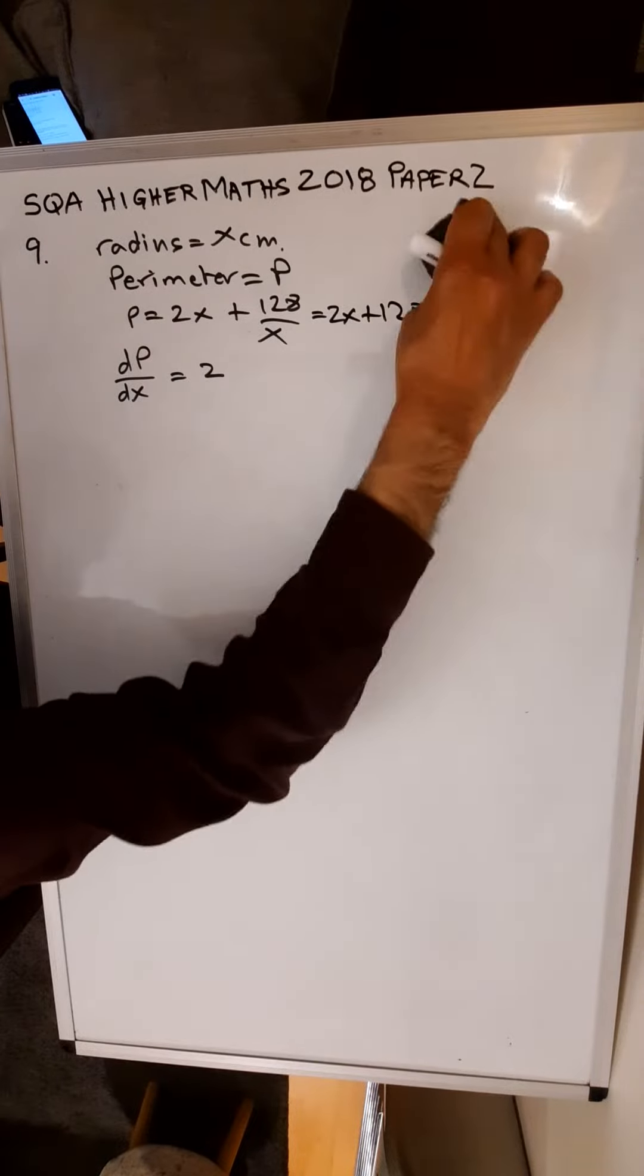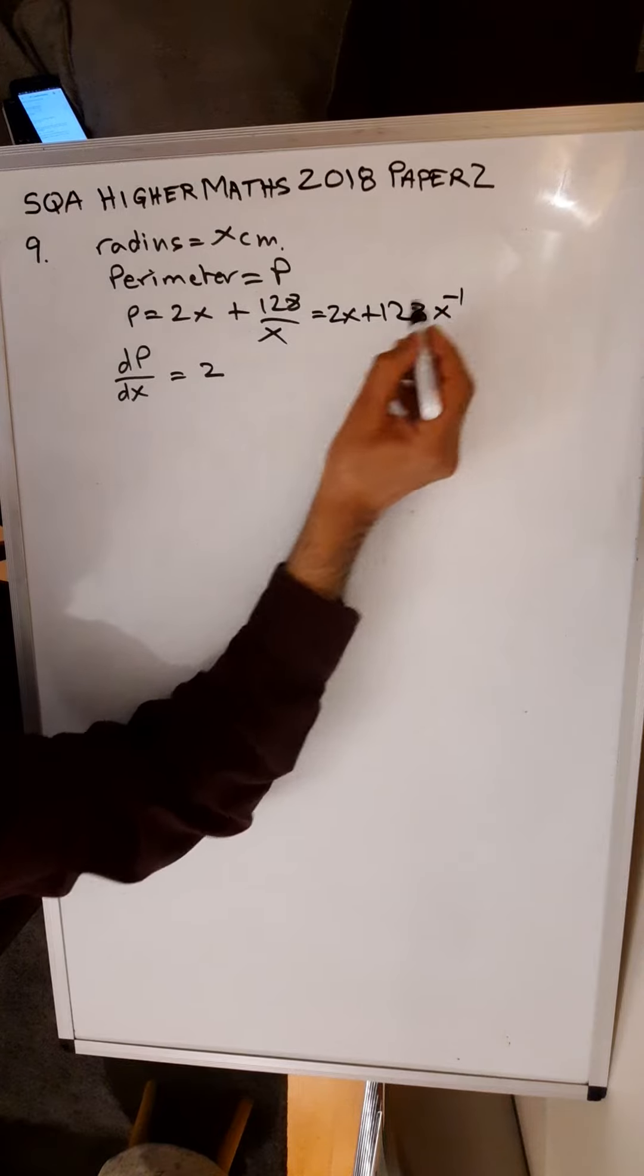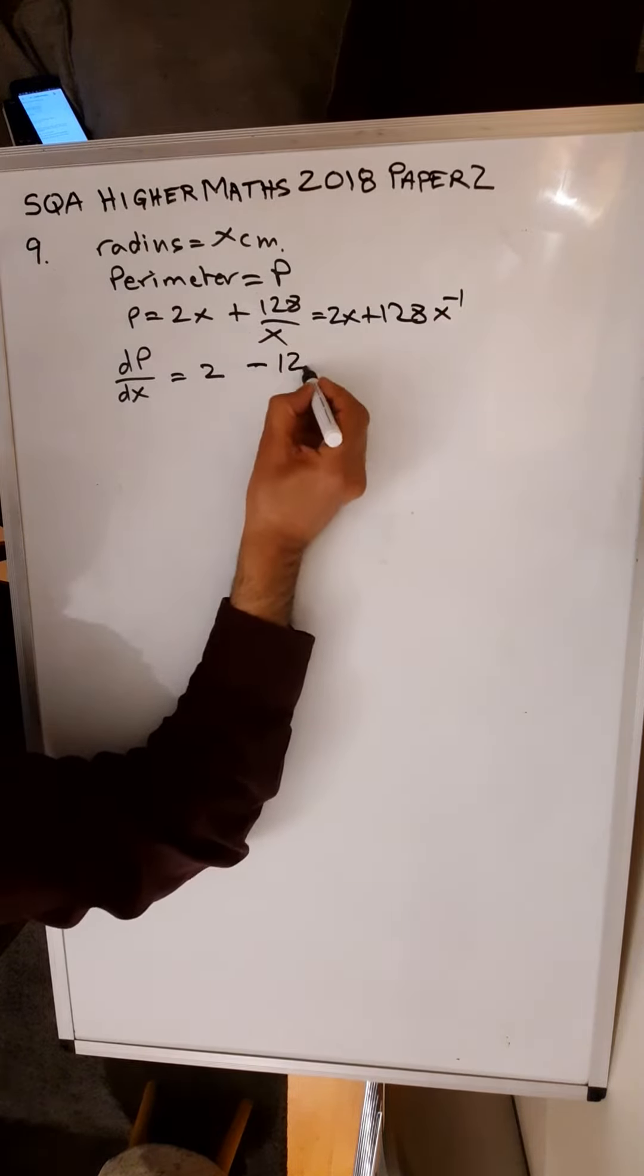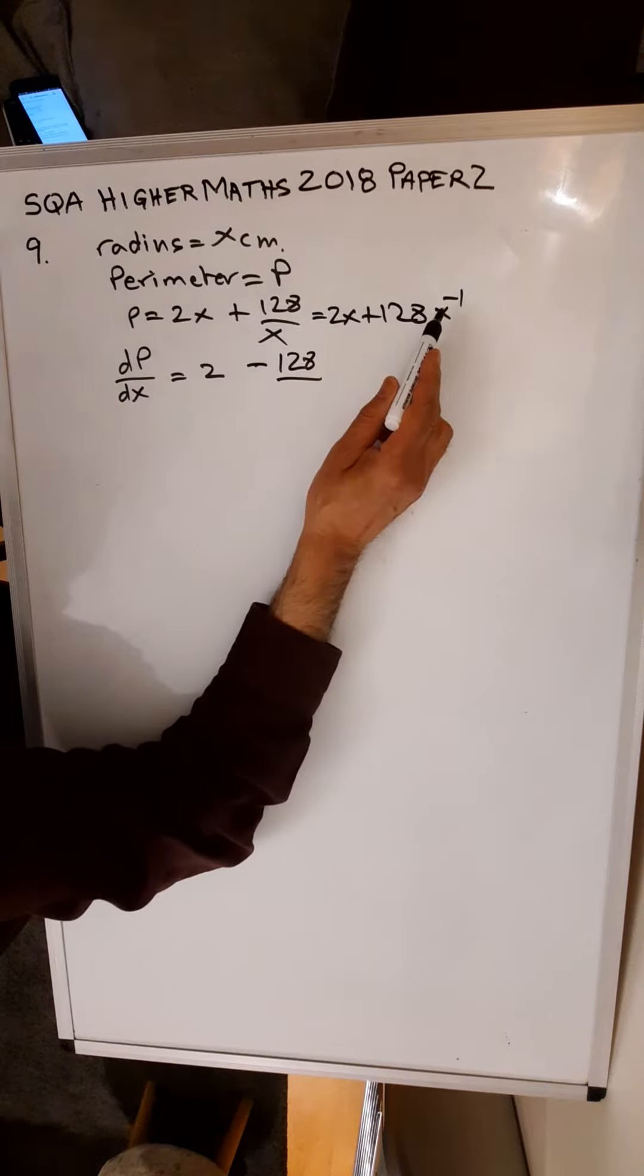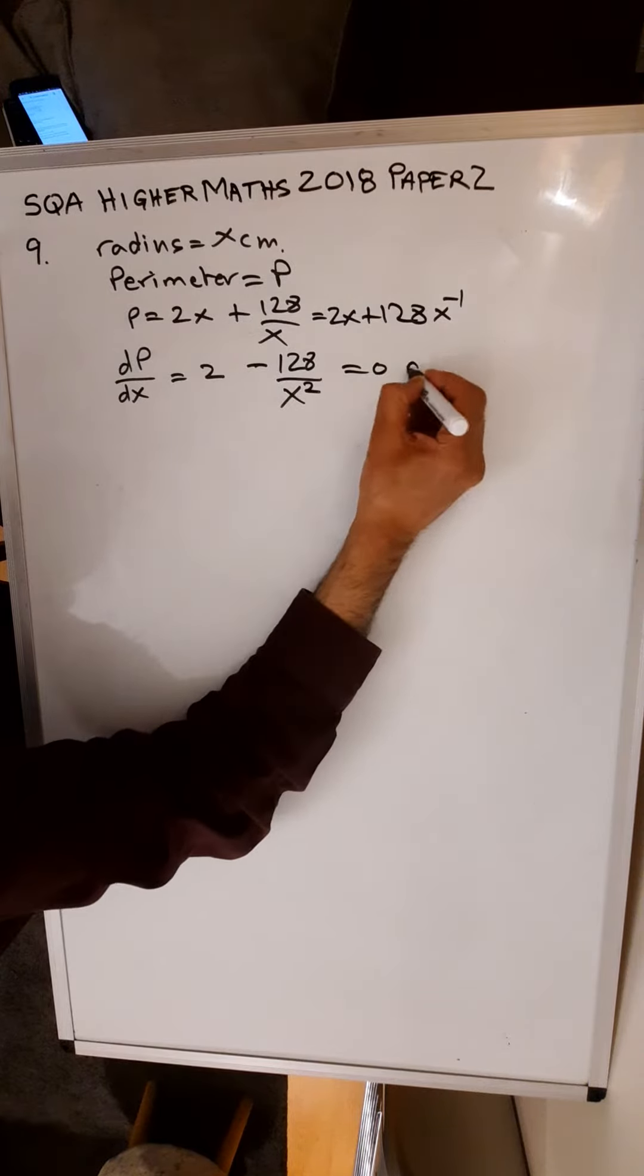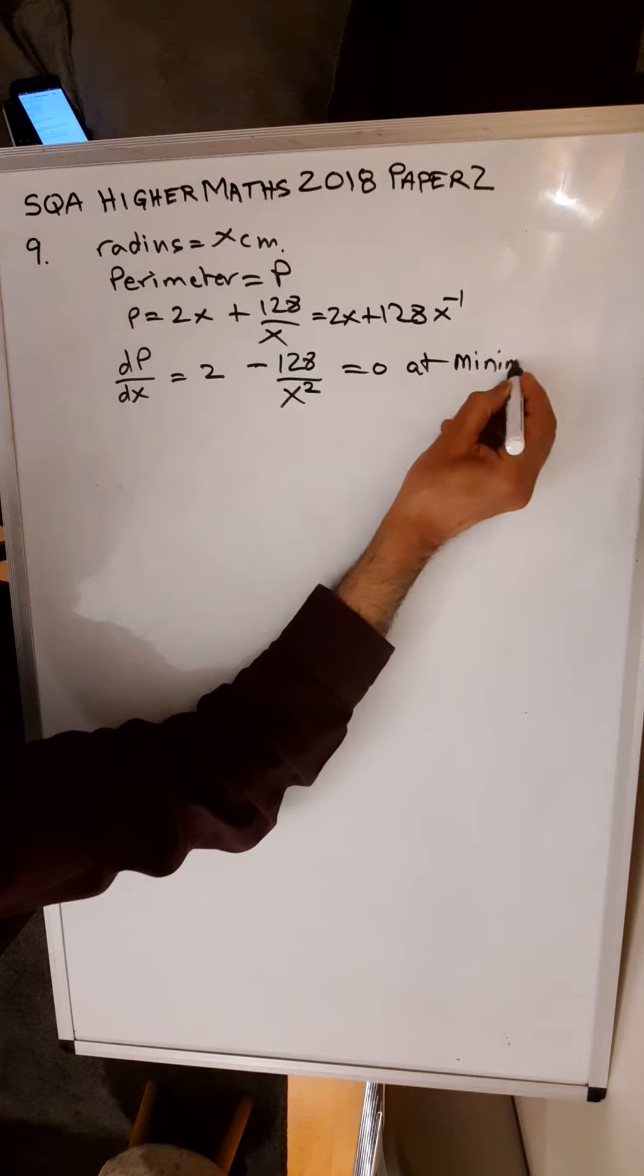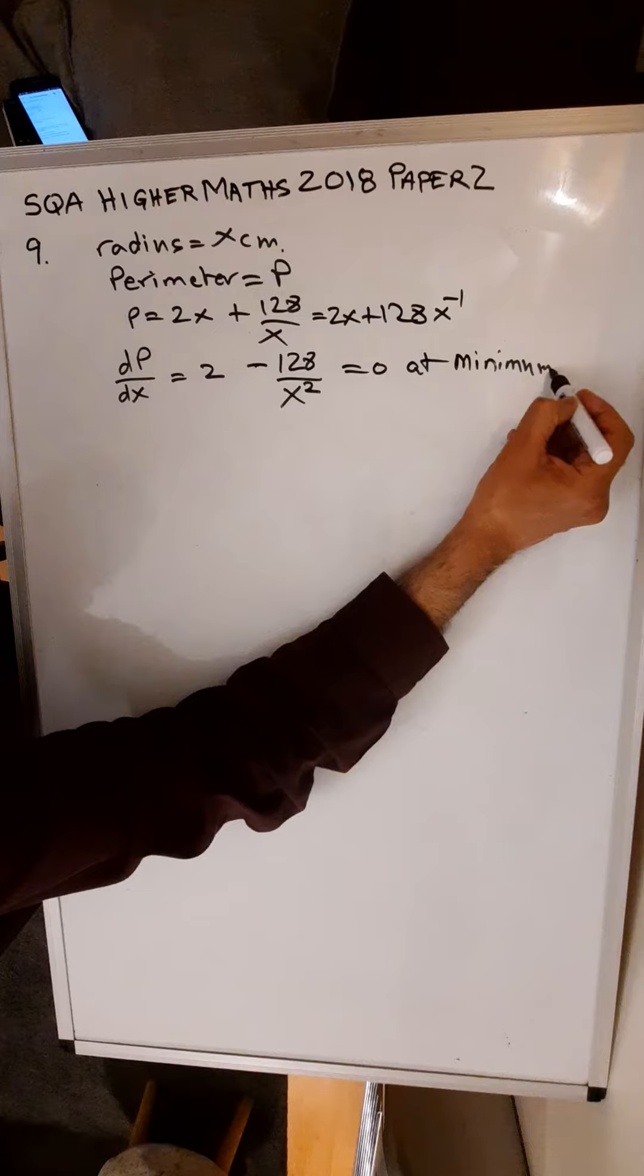Bring the x into the numerator, changes index. Bring the minus 1 to the front: minus 128, and take 1 away from the index makes it minus 2. Put it into the denominator to give it a positive index, and that is equal to 0 at minimum.